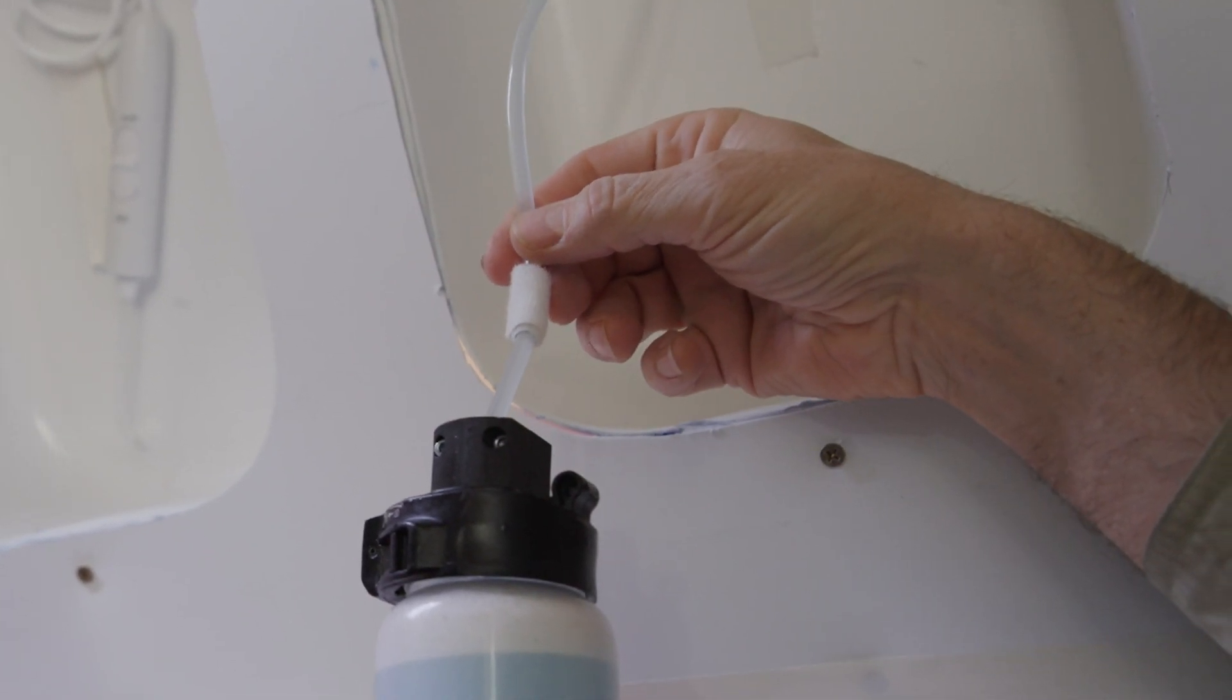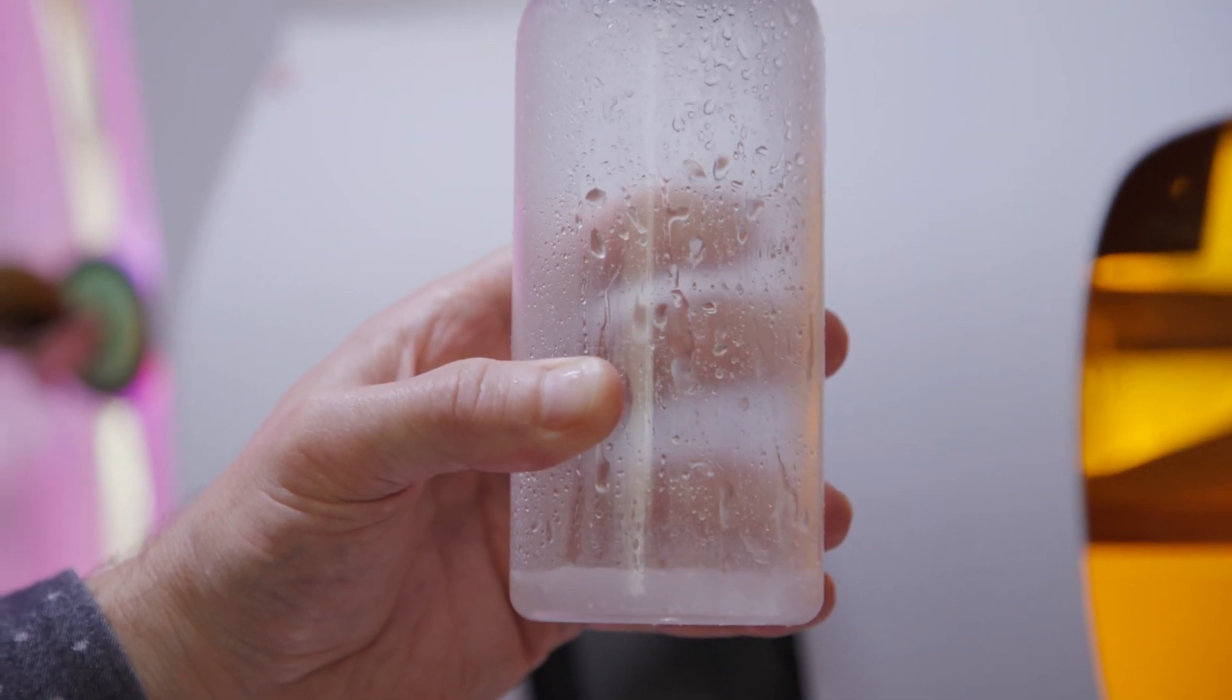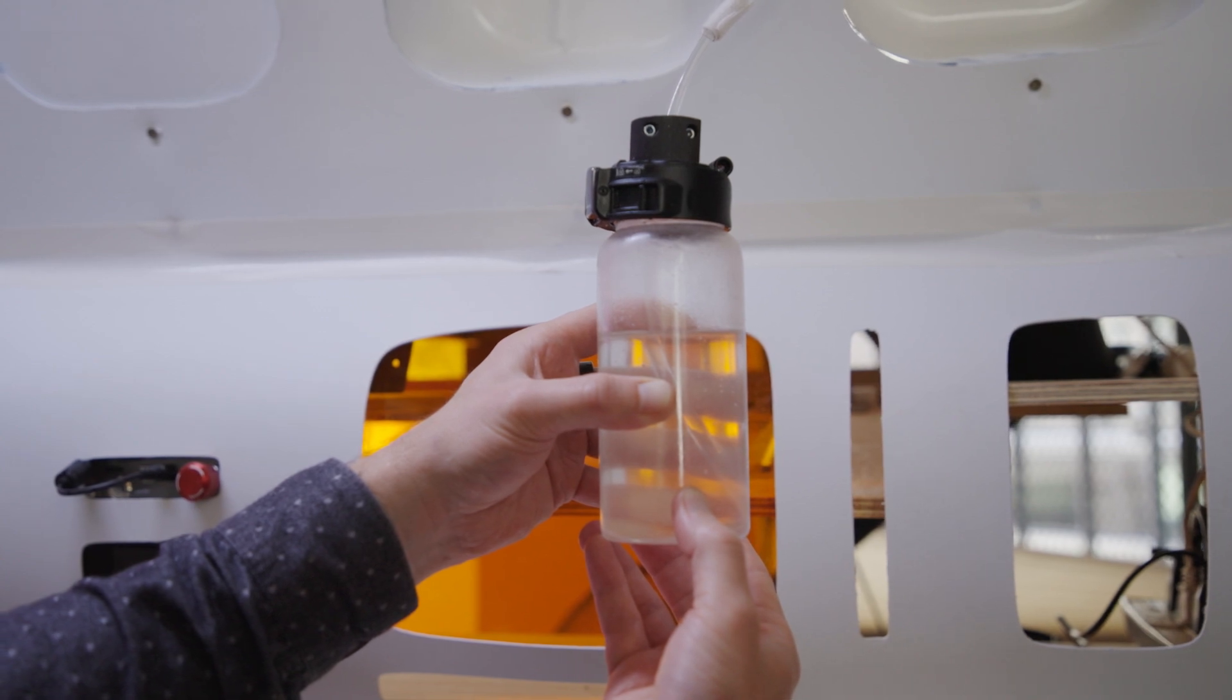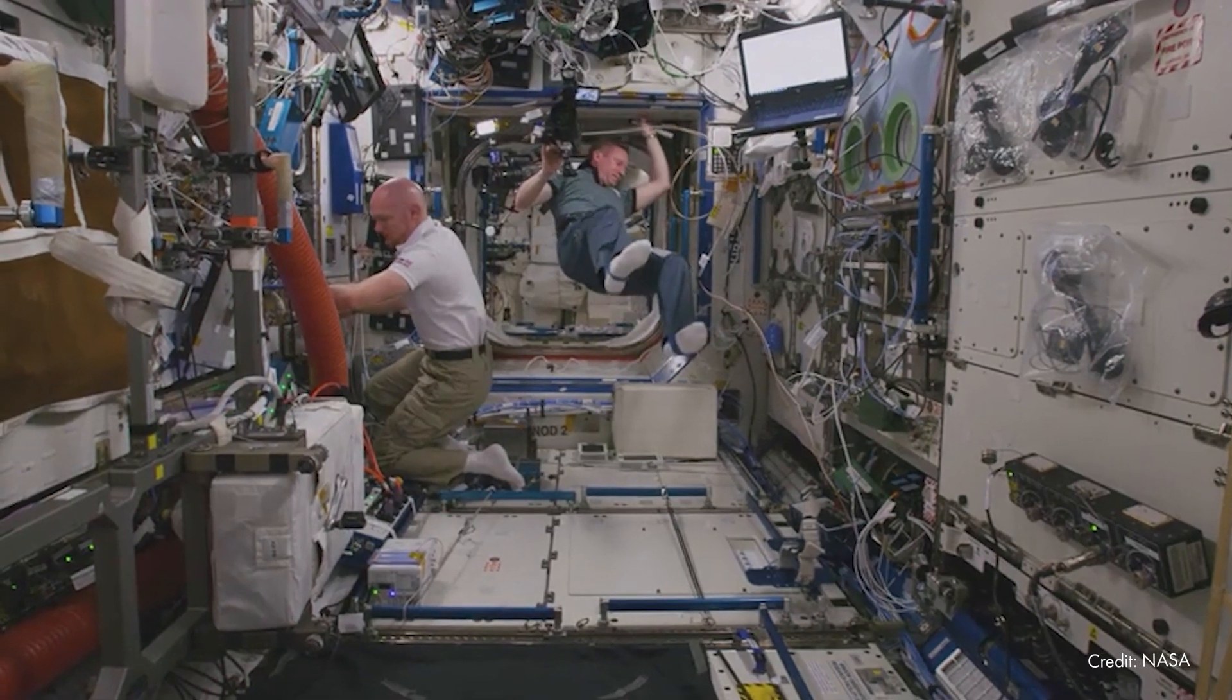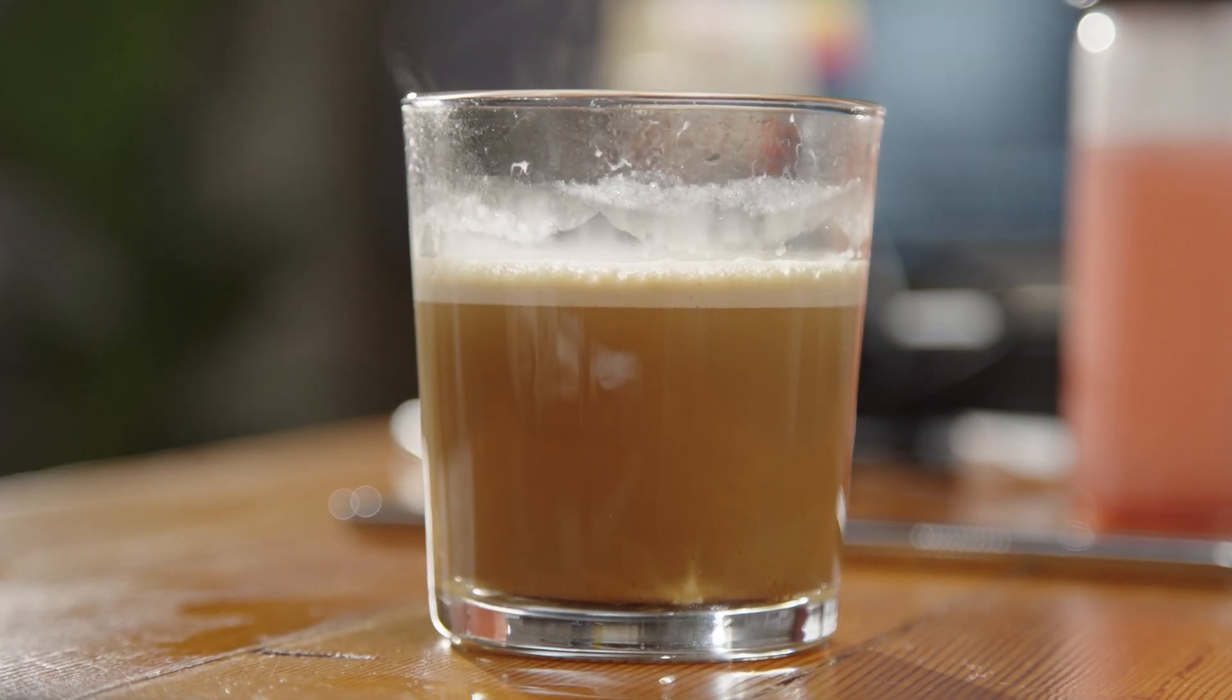Finally, insert a suction probe to drain the cleaning fluid, then rinse and repeat. No further maintenance steps are needed between uses. Now astronauts can enjoy a variety of unctuous and comforting beverages, just like they would at home.